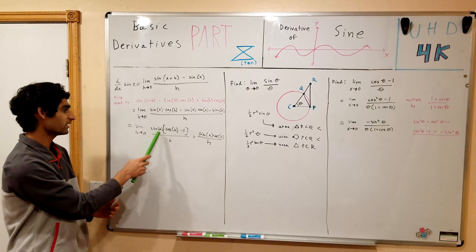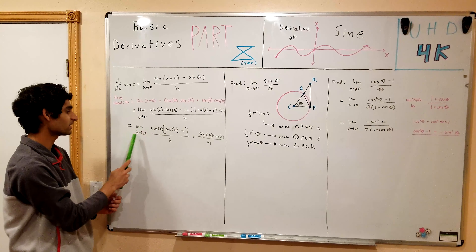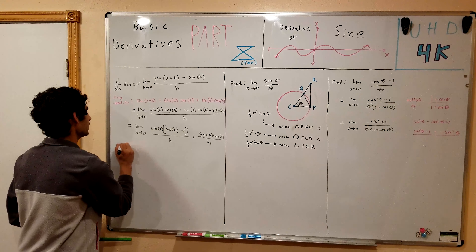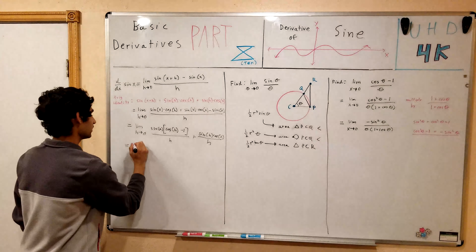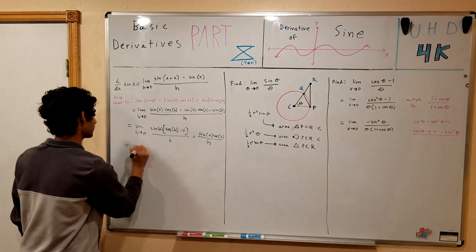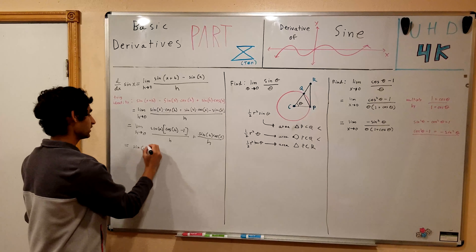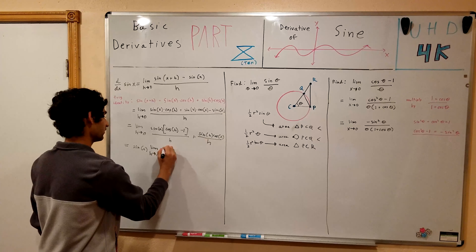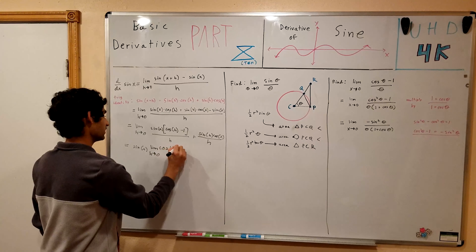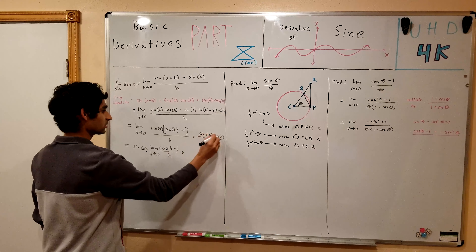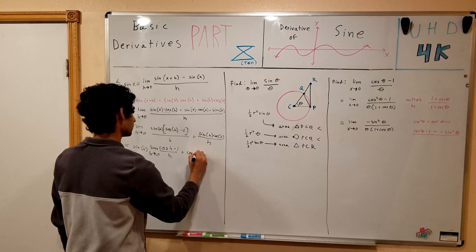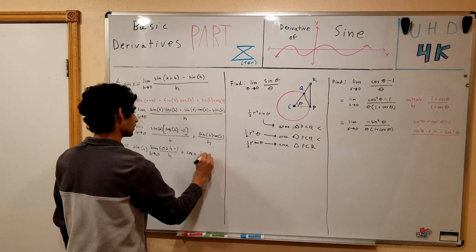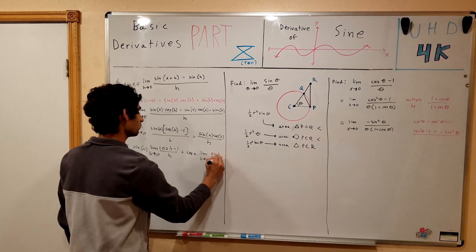We can factor out sine of x and cosine of x from their respective limits. Why? Because sine of x and cosine of x don't include the term h, so they can be factored out of the limit as constants. This gives us sine of x times the limit as h goes to 0 of cosine h minus 1 over h, plus cosine of x times the limit as h goes to 0 of sine h over h.